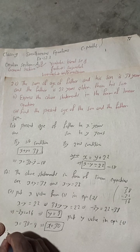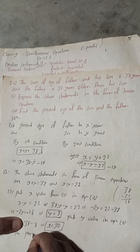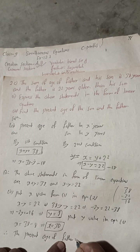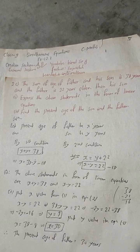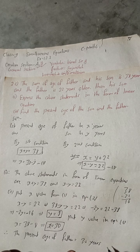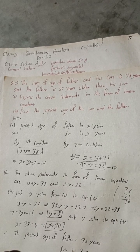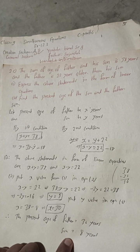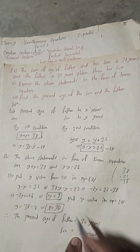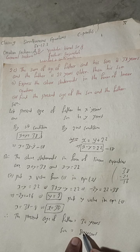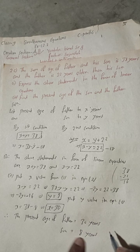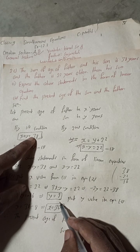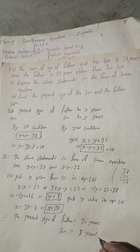Therefore, the present age of the father is 30 years and the present age of the son is 8 years. We can verify: x plus y equals 30 plus 8 equals 38, and x minus y equals 30 minus 8 equals 22. Both conditions are satisfied, so this is the correct answer.